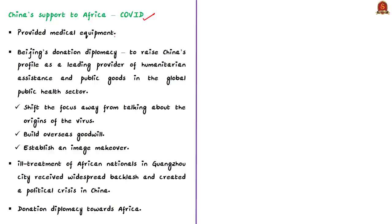China provided medical equipment, testing kits, ventilators and medical masks to several African countries. In addition, Jack Ma, co-founder of Alibaba Group, donated three rounds of anti-coronavirus supplies — termed by the authors as 'China's billionaire philanthropy.' Chinese embassies across Africa coordinated both public and private donations to local stakeholders. The authors point out that the primary motive of such donations is to raise China's profile as a leading provider of humanitarian assistance, which they term 'Beijing's donation diplomacy.'